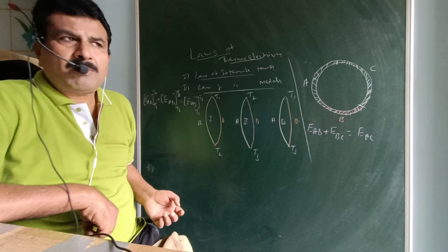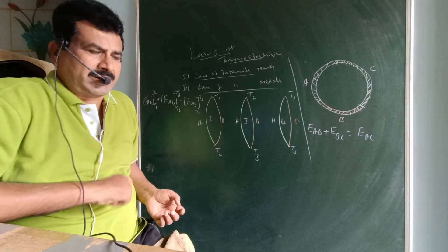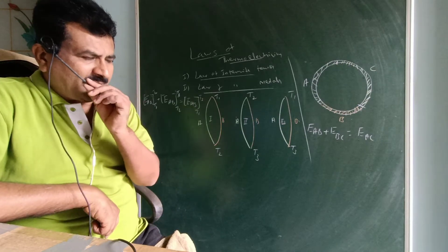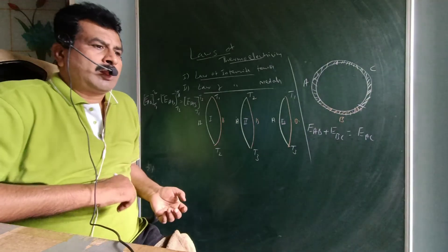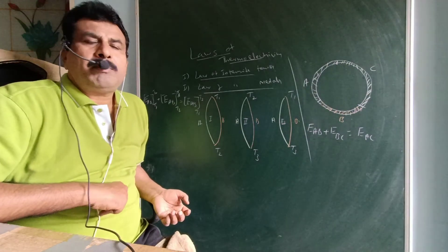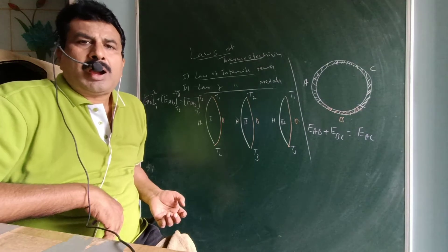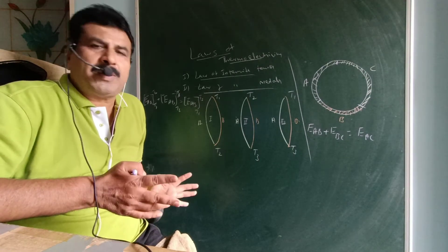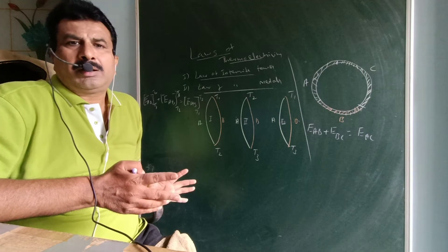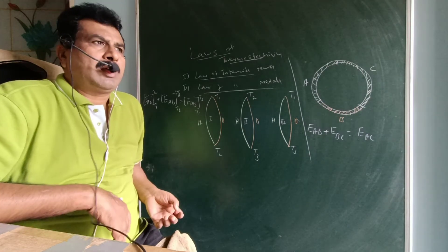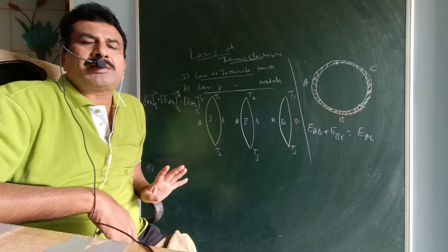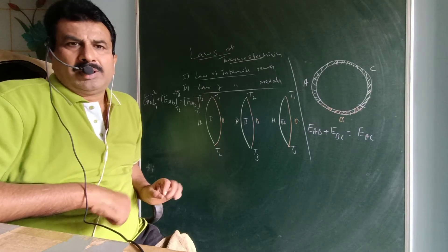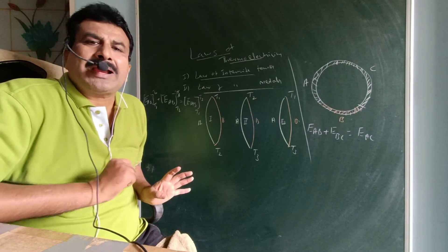What are the laws of thermoelectricity? The Seebeck effect is defined as: an EMF and the current produced in a thermocouple when the junctions are maintained at different temperatures is called the Seebeck effect.